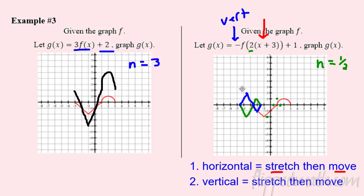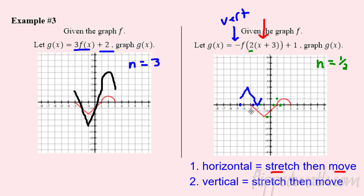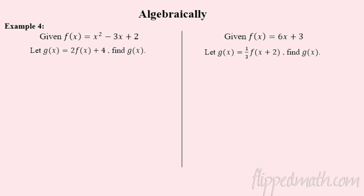Don't forget the last step — after flipping, we need to vertically shift up one. So we take this shape and shift it up one. That's where we end up. You can erase the intermediate construction lines and just show the final product.